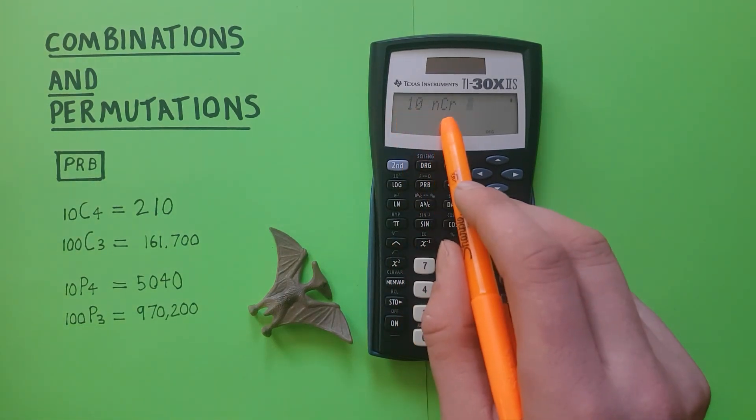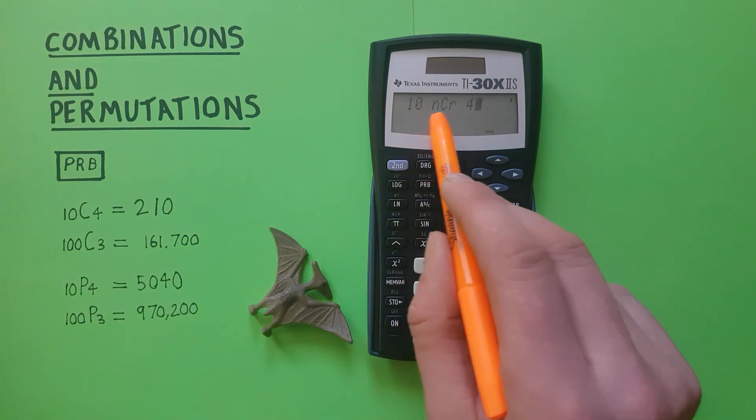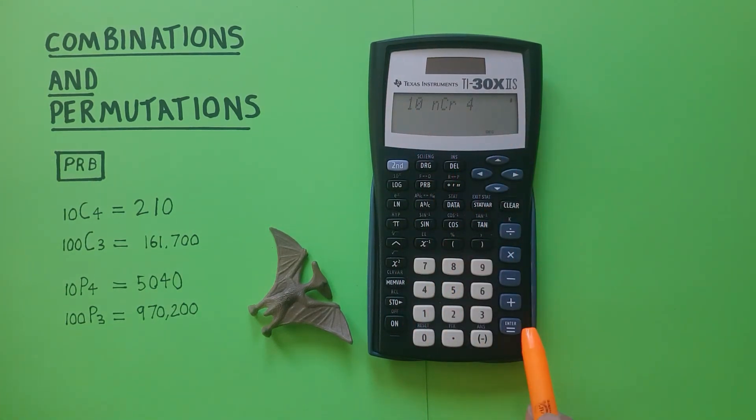There we go, 10 NCR and then 4. This means 10 choose 4 and we press equals and we get a result of 210 which tells us there are 210 possible ways to choose 4 from a set of 10 when the order does not matter.